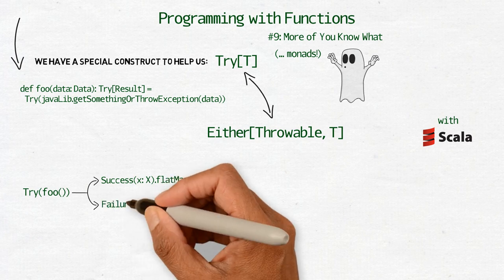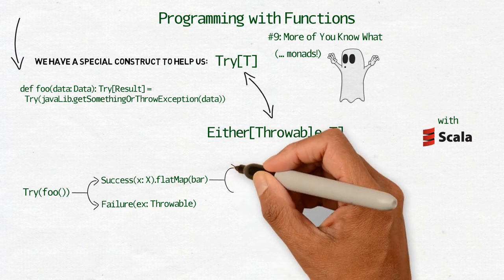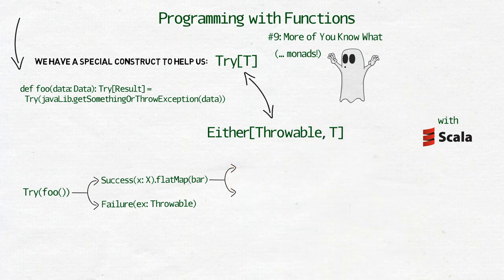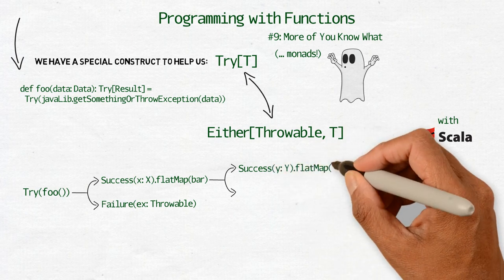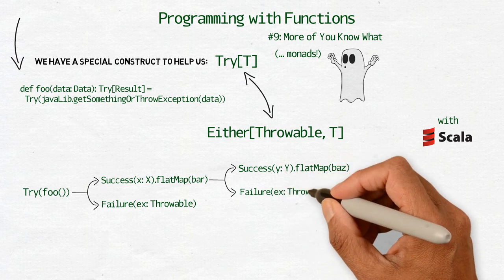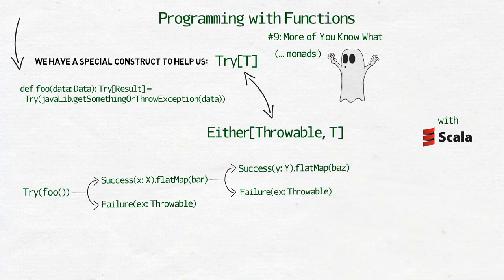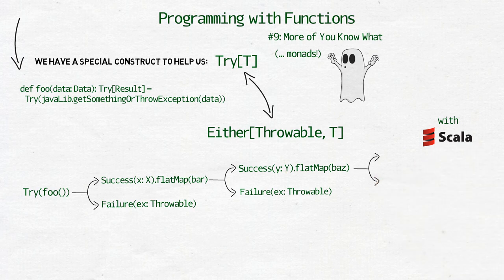The subclass success contains the result of successful computation, while failure contains the exception that was thrown instead. Just as with either, try enables us to use flatmap to chain calls to functions which can throw exceptions. We also have access to map, foreach, filter and so on. All the usual methods from the Scala standard library.